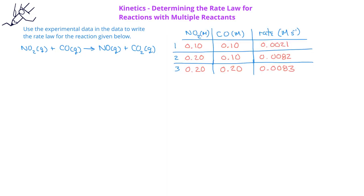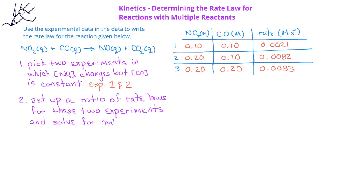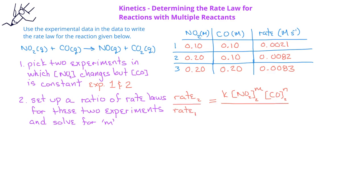In order to write the rate law for this chemical reaction, we need to pick two experiments in which the concentration of NO2 changes but the concentration of CO is constant. We've already indicated that this situation can be described by experiments one and two. Next, we'll set up a ratio of the rate laws, so we have the rate in experiment two equals the rate constant K times the concentration of NO2 to the m power multiplied by the concentration of CO to the first power. In the denominator, we'll have the rate for the first experiment, and on the other side, we'll have the rate constant multiplied by the concentration of NO2 for the first experiment multiplied by the concentration of CO for the first experiment.